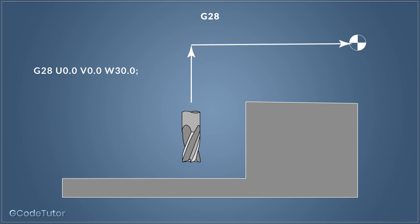We might also see G28 used with auxiliary axes commands — the U, V, or W commands. This would omit the G91 if the machine likes it this way. We see this mostly on lathes and not milling machines. This line may be written as G28 U0.0 V0.0 W30, and it would do exactly the same thing. But this system is more commonly used on lathes than milling machines.